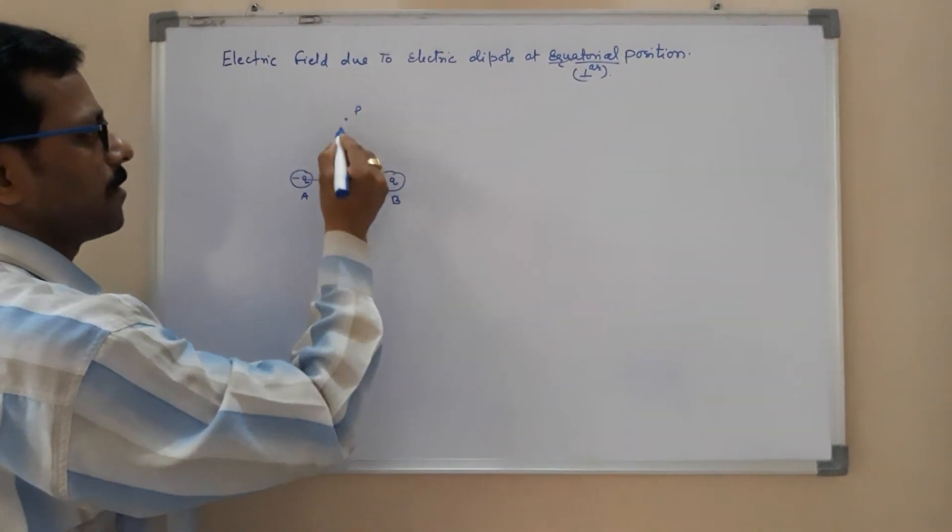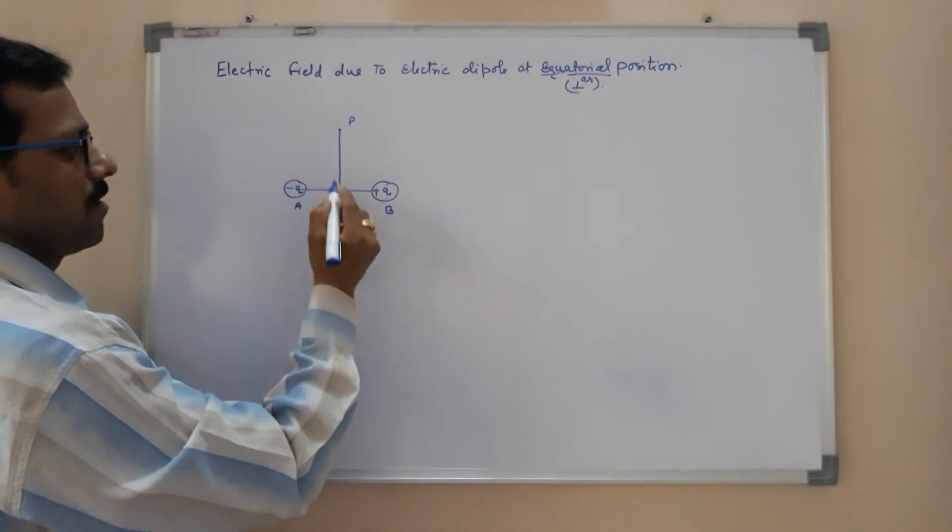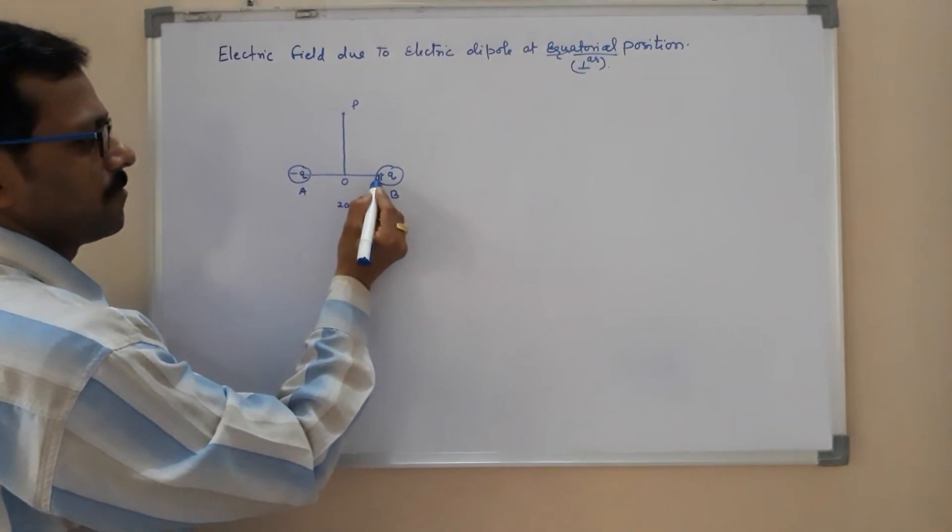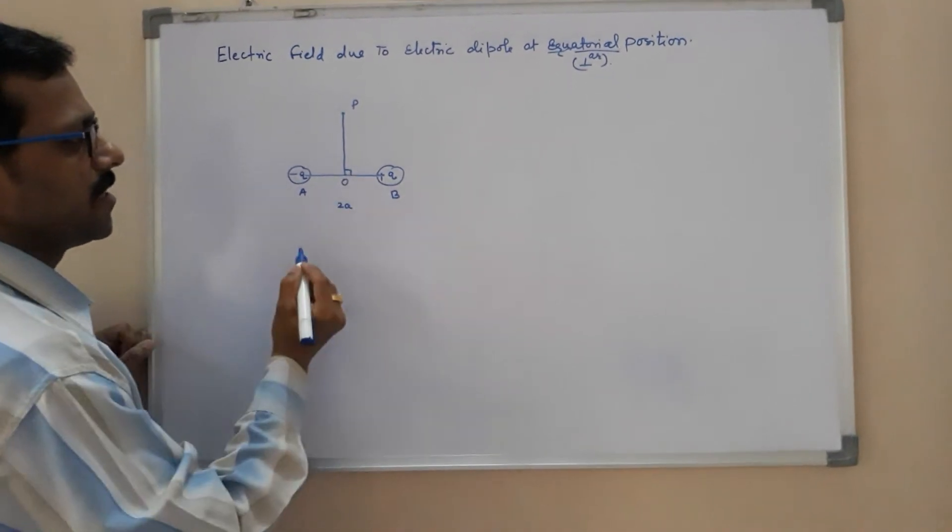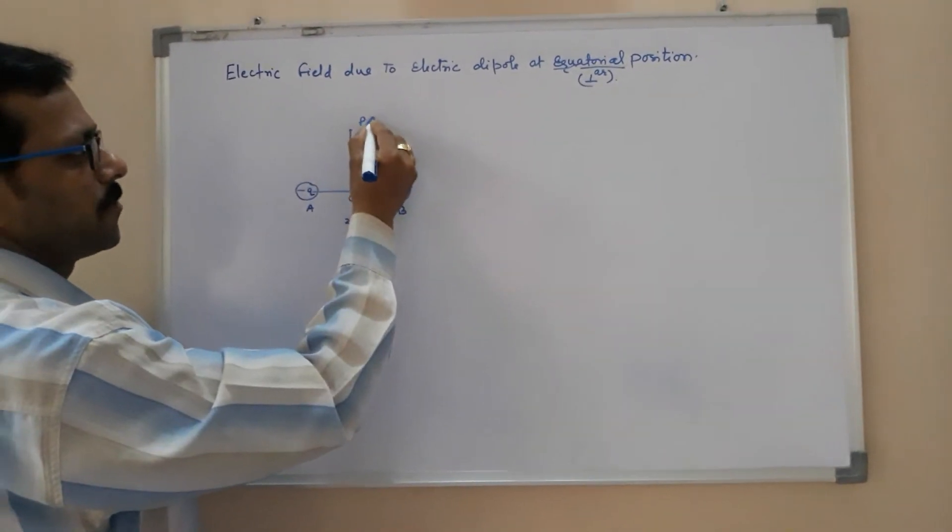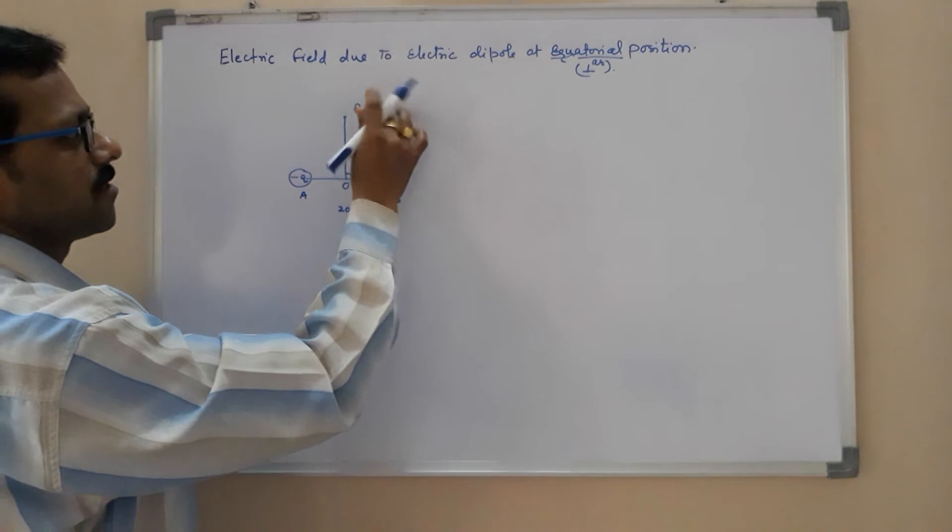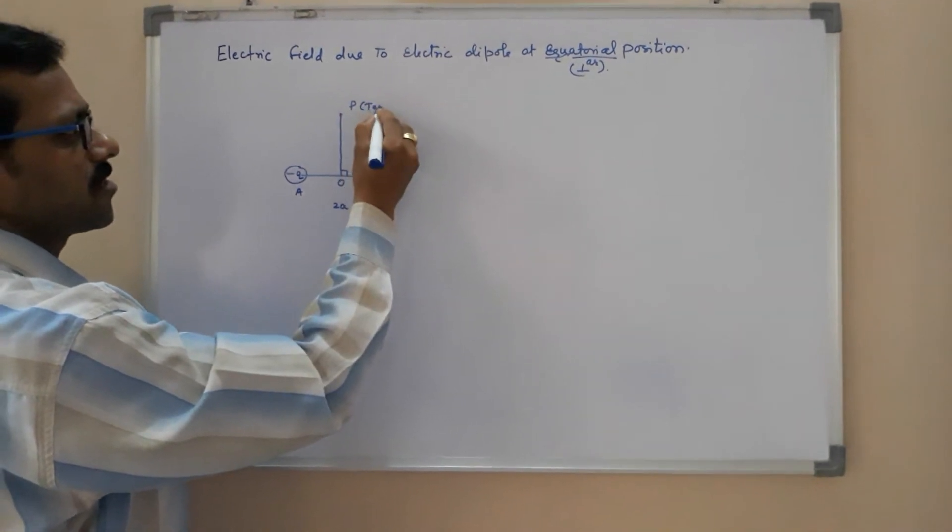We have taken a point P which is perpendicular from the midpoint of the dipole AB, that is 90 degrees. So here at point P, there is a test charge.